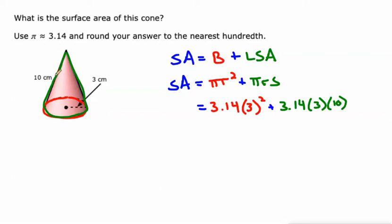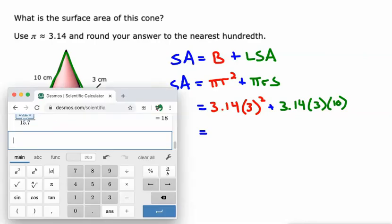As opposed to the height, which is straight up and down right here. They could give us that and make us do the Pythagorean theorem to figure out the slant height, but I didn't see that anywhere in this skill. So here we go.